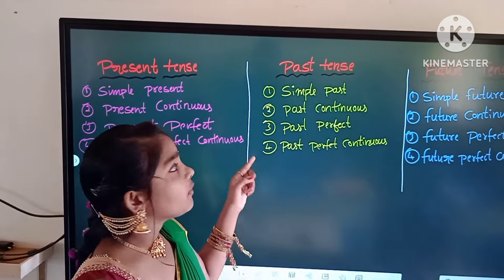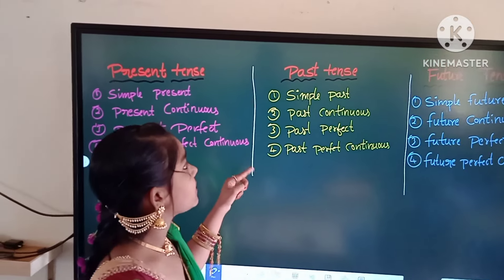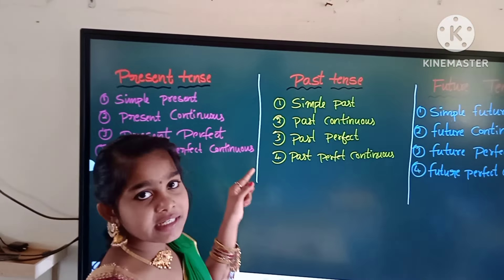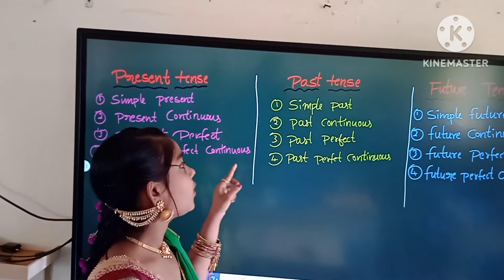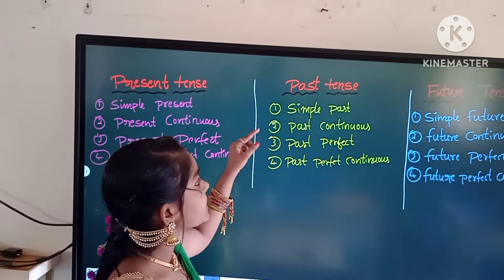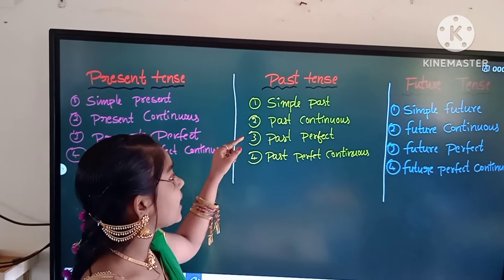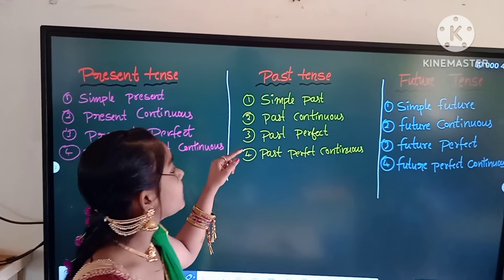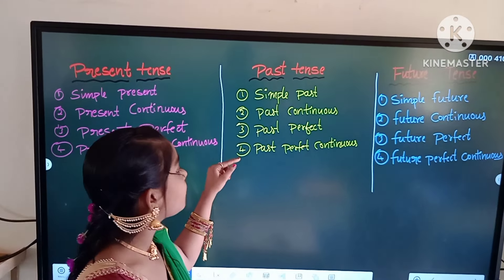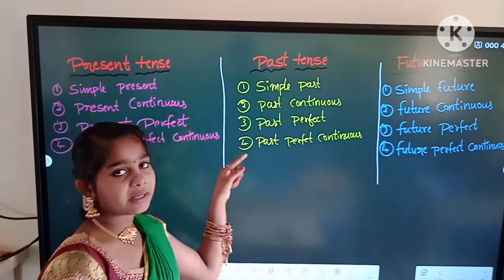Second one is past tenses. Past tenses are divided into four types. First one is simple past tense. Second one is past continuous tense. Third one is past perfect tense. Fourth one is past perfect continuous tense.